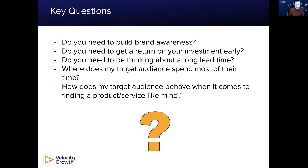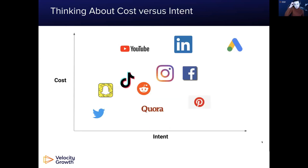Who is your target audience and where are they hanging out? How do they behave when they're looking for a service or product like yours? Do they search for it? Do they typically just come across it? Is it an impulse buy? Is it something they need or want? The first thing to really take into consideration is the cost versus the intent. A great example is Google Ads — someone searches for something and your ad comes up. That's extremely high intent because the user has taken action to look for the solution. They're actively seeking it.